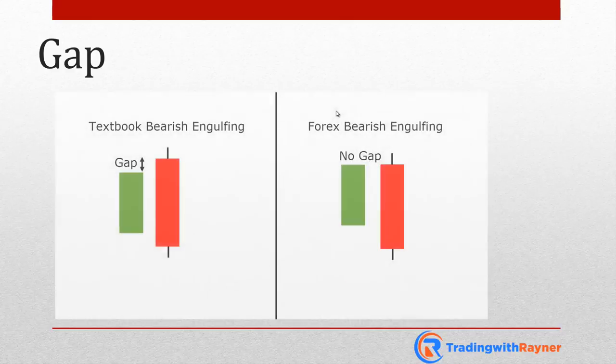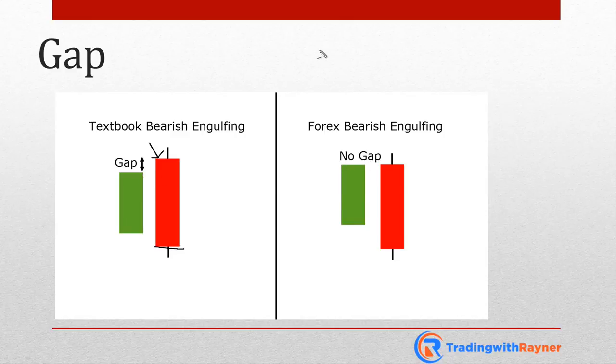The third limitation is the gap. Traditionally, some candlestick patterns come with a gap — for example, the engulfing pattern, which has to gap above or below the prior candle. We will cover that in more detail later. But basically, traditional candlestick patterns come with a gap. So if you're trading markets like the Forex market, which is open 24/5, you have to take this into consideration. For example, a textbook bearish engulfing looks like this: the market gaps open above the previous candle and then closes lower, covering the entire body of the previous candle. But in the Forex market, you hardly have gaps because it's open almost 24 hours a day.